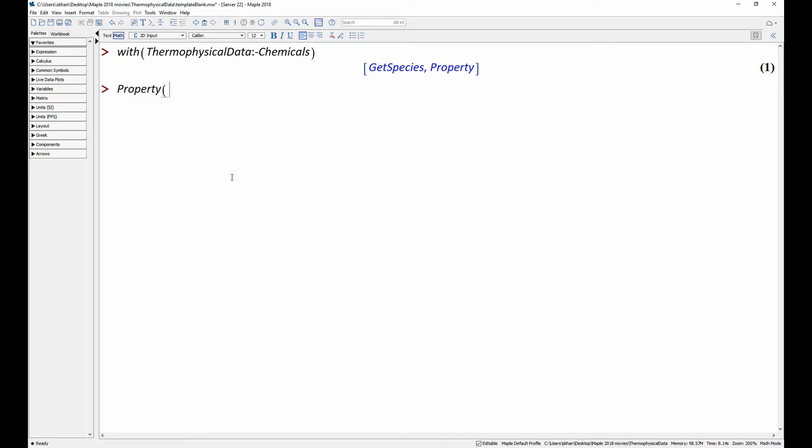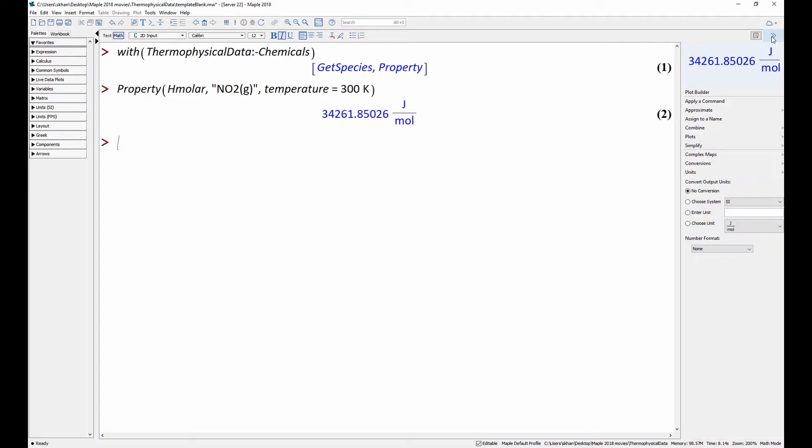An intuitive command lets you access the data. Here we extract the enthalpy of nitrogen dioxide at 300 kelvins. The new context panel is then used to convert units and change the number format.